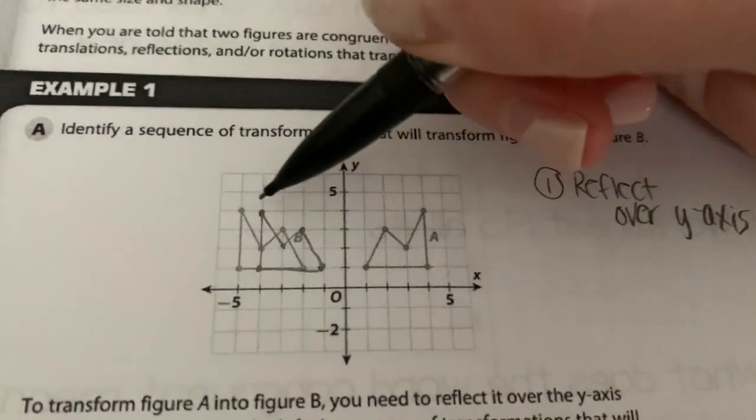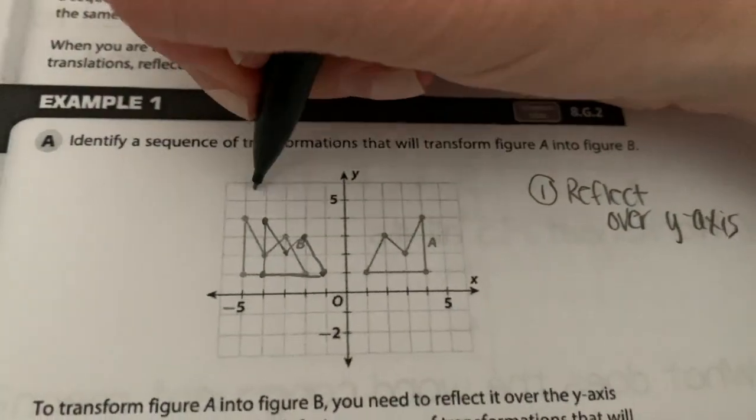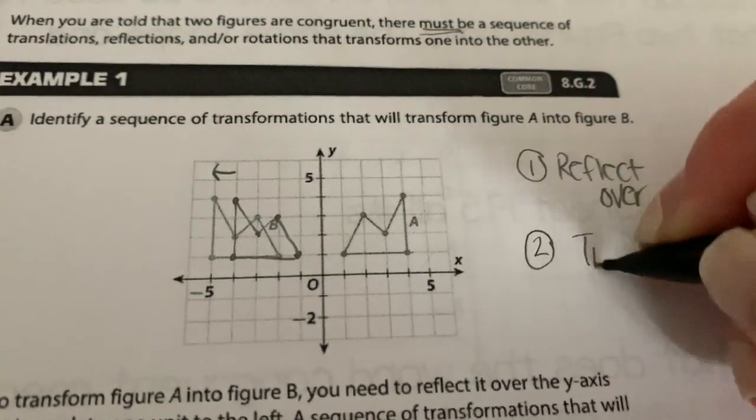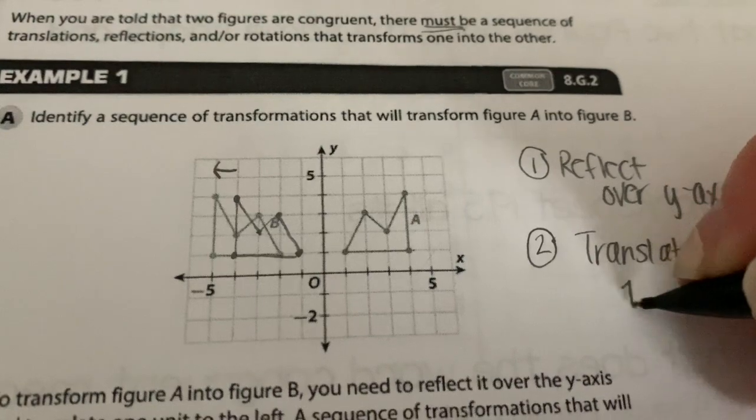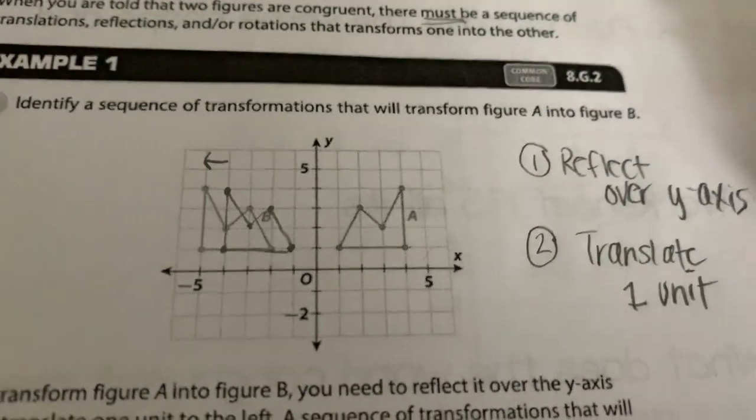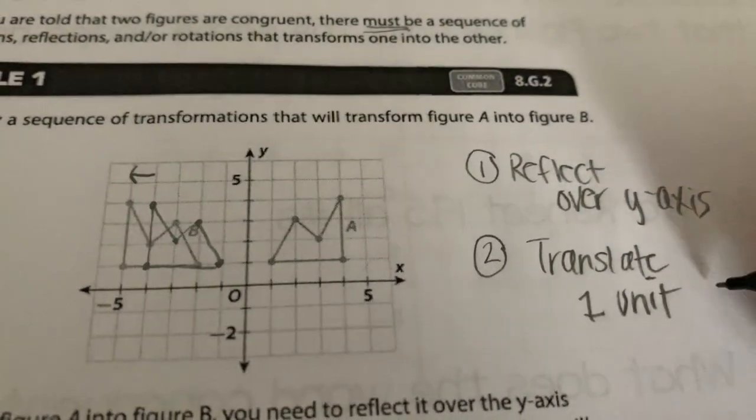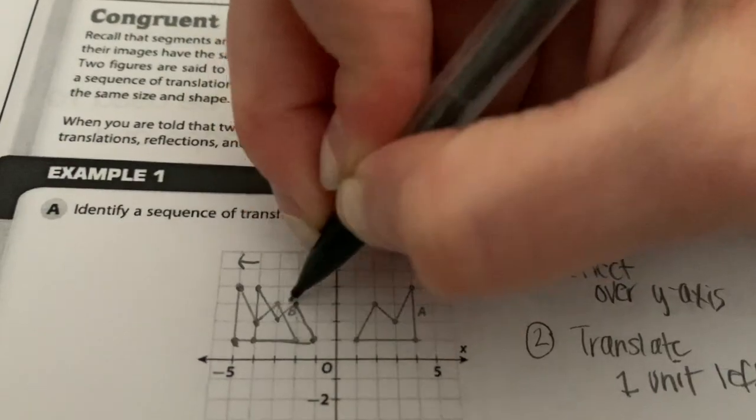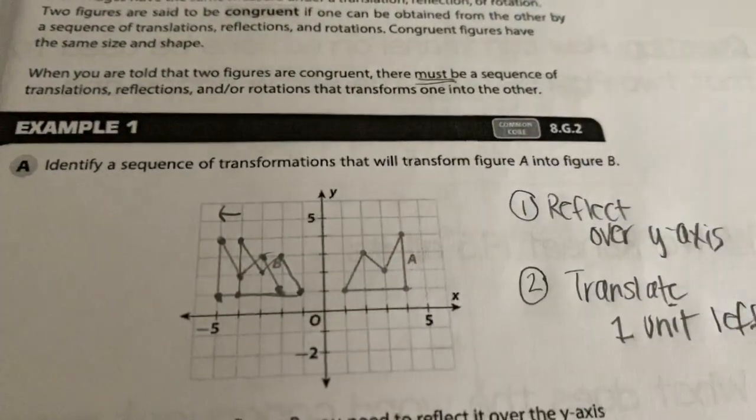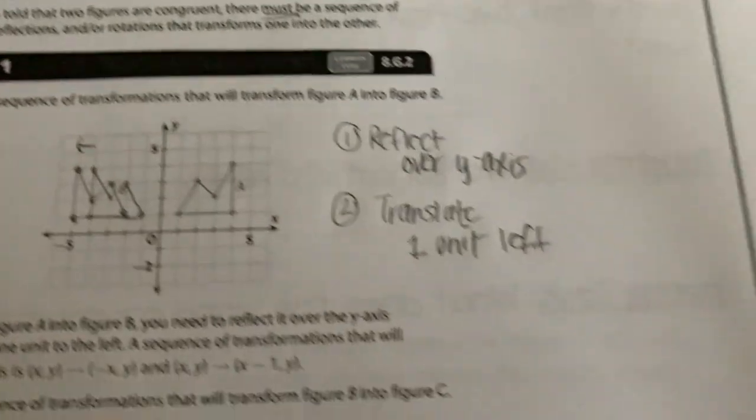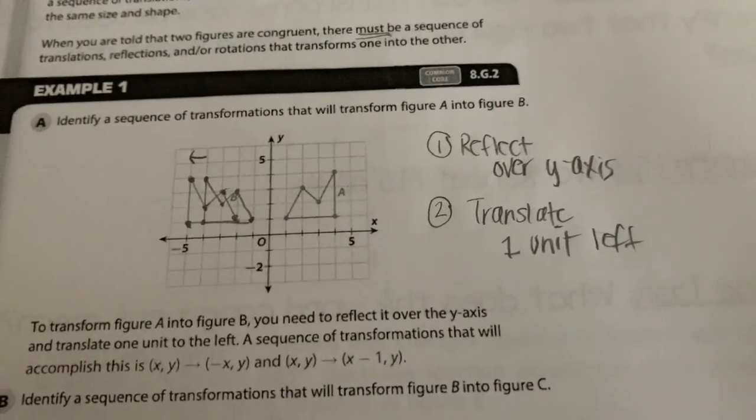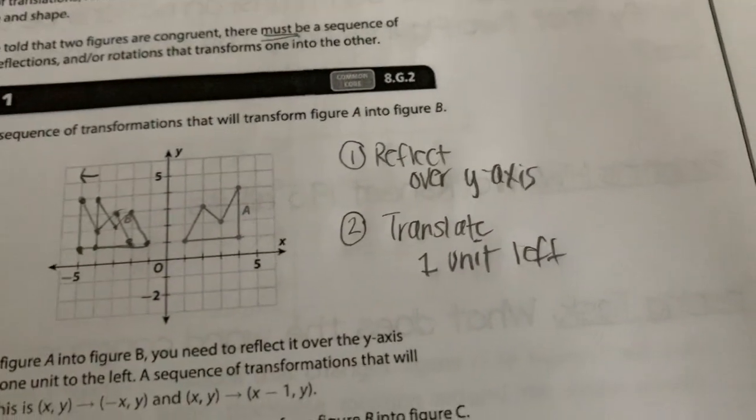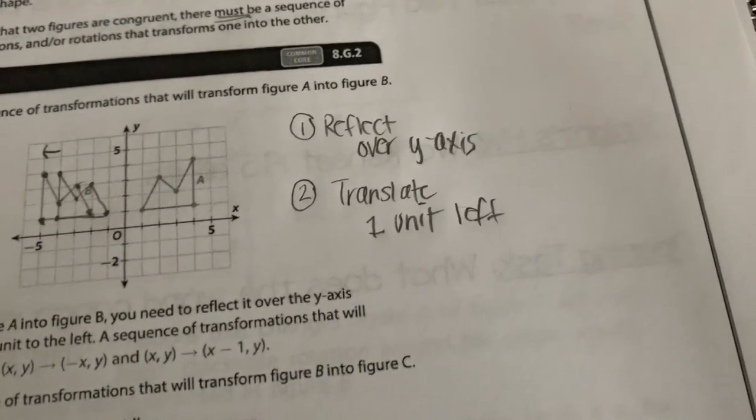But then for it to be completely overlapped, we would have to translate it one time just over to the left once. And once we translate it, then it will be completely overlapping the other. So translate one unit left. So if I do that, then everything will be overlapping. So all you have to do in this lesson is just say a series or a sequence of transformations that will transform this figure into that one. So this would be your answer. You can reflect over the y-axis and then translate one unit left.